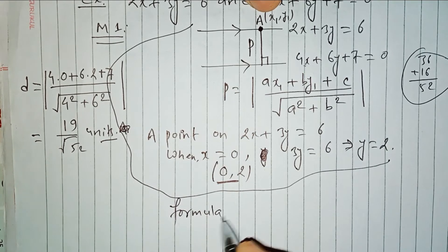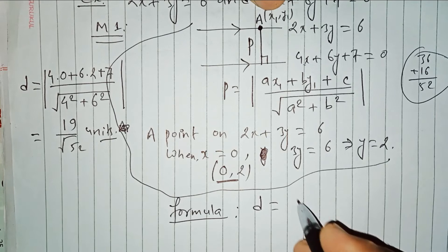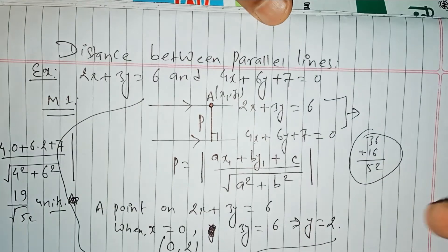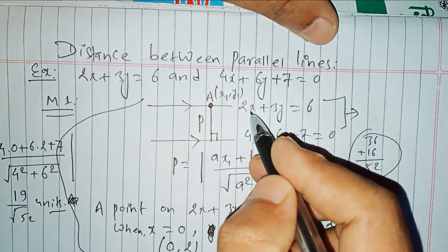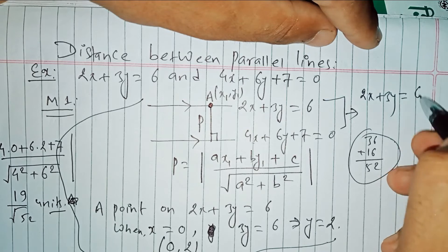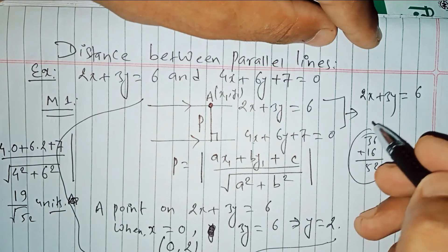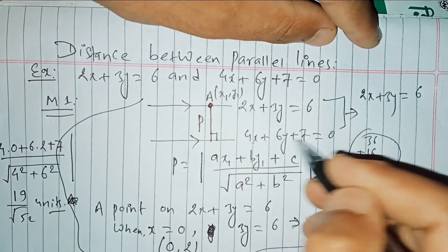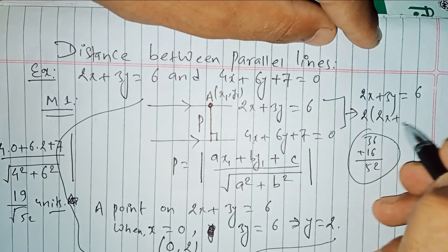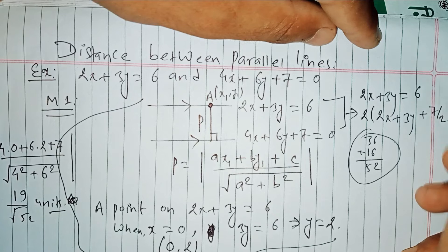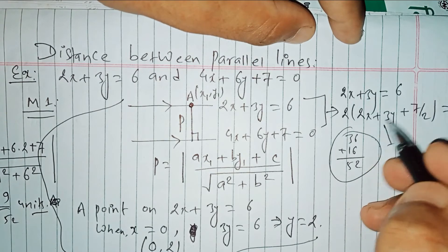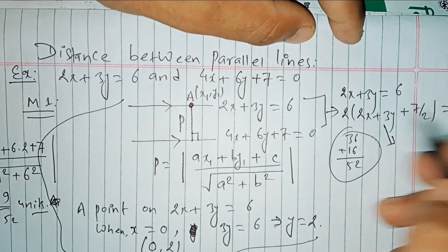Method 2 uses the direct formula. The distance between two parallel lines is D. To use this formula, make the coefficients of x and y the same in both lines. Divide the first line 2x plus 3y equals 6 through by 2 to get: 2x plus 3y plus 7 over 2 equals 0.